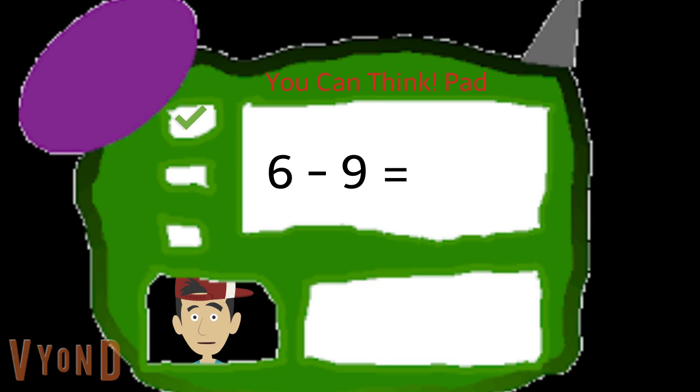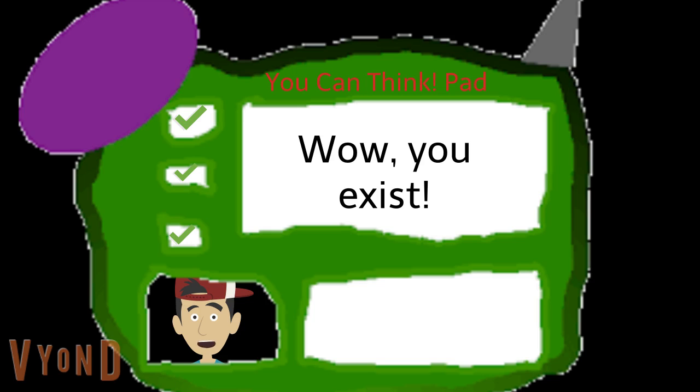Problem 2, 6 minus 9 equals. Wow, you got it! Problem 3, 7 times 3 equals. I can't believe it, you are incredible.